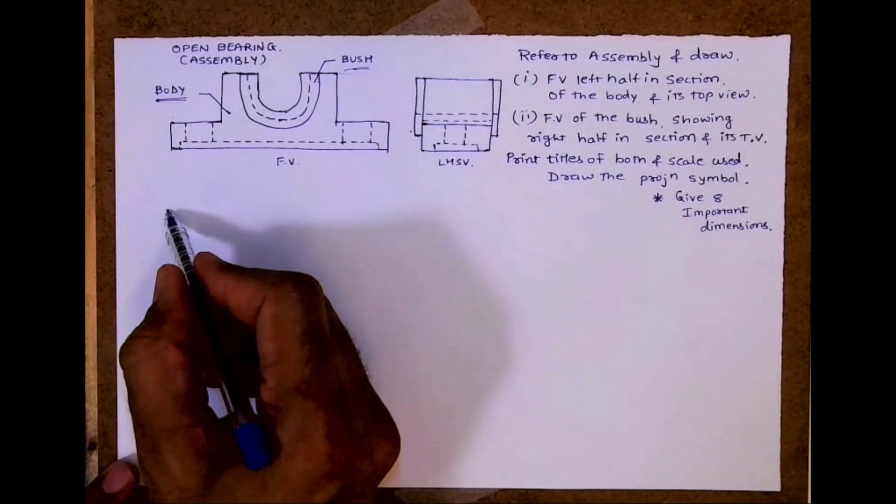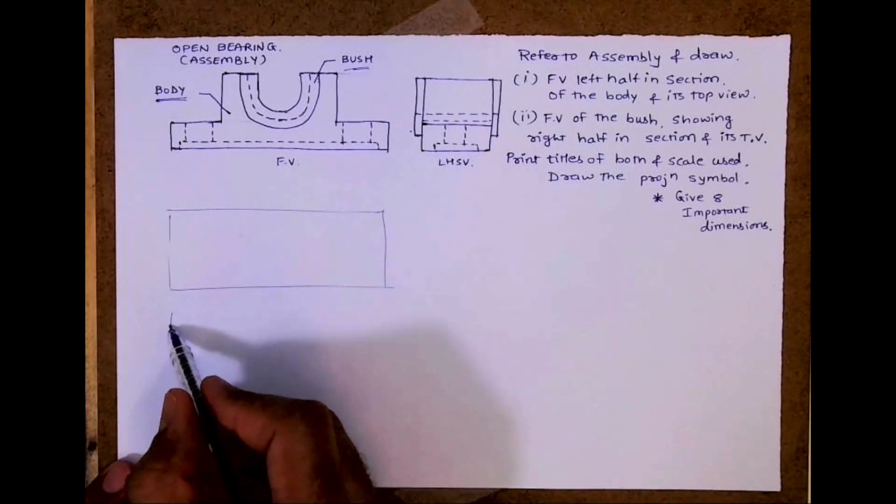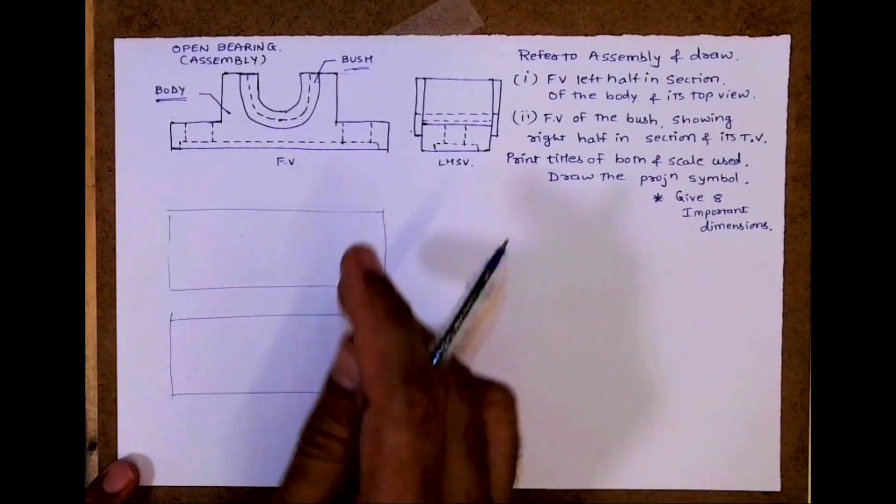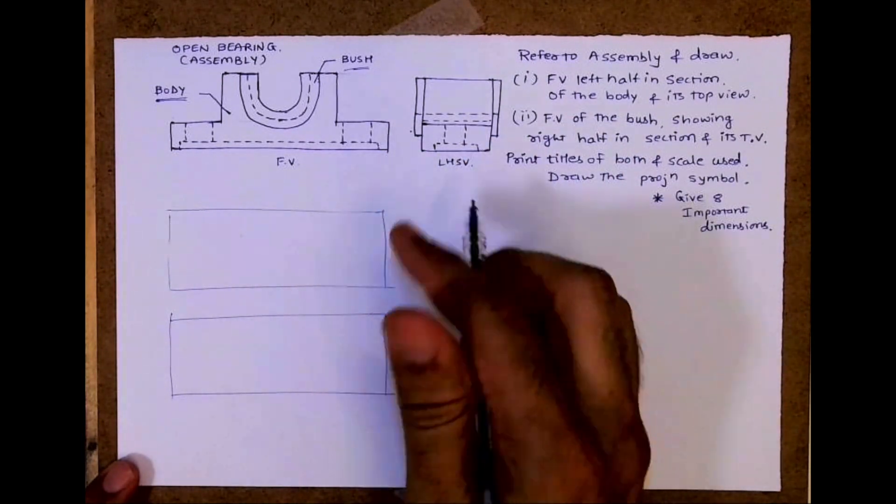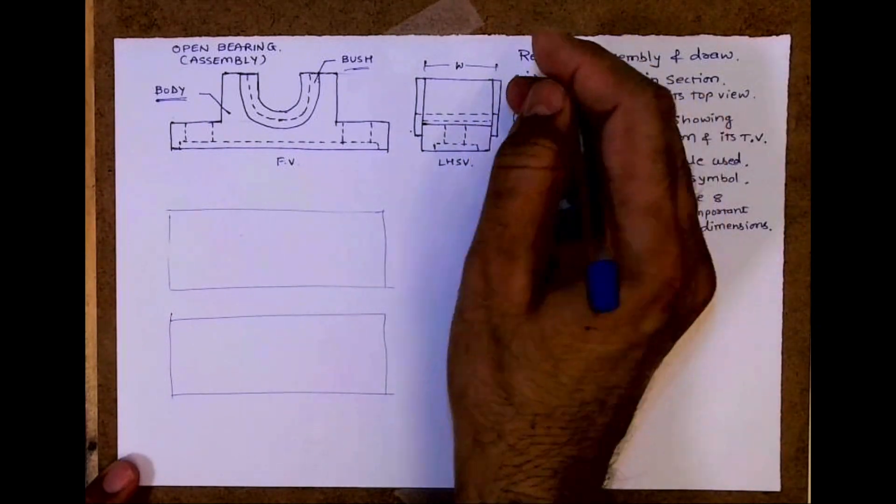So first we'll start with front view of body. I will find out total length and height. And I need to draw top views. I'll find out total length and width. Now remember length and height you will get from the front view. Width you will get it from side view. Now when you're finding out, this will be the width of body.